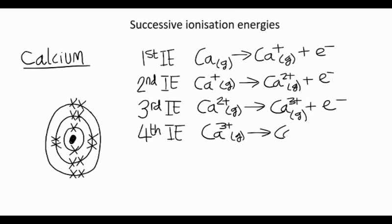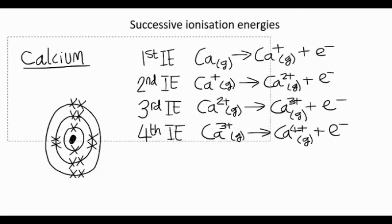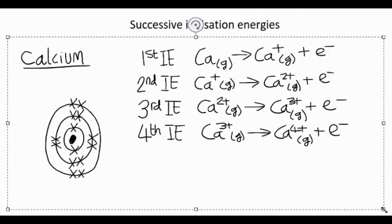And we can keep doing this all of the way down until we've removed all of the electrons. We can measure the value of these successive ionization energies, and if you have a look at the data, you see that they always increase. So let's have a look at some real data now.